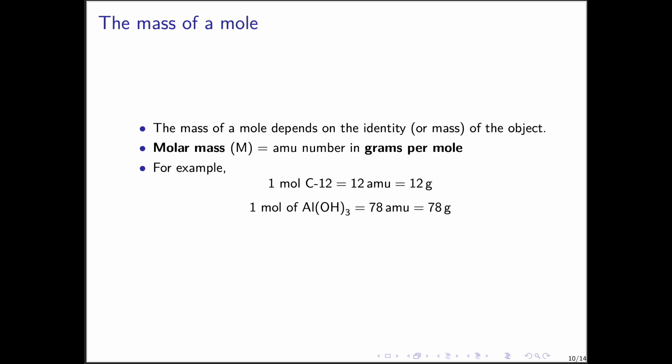The mass of one mole of a substance depends on its identity. This is called the molar mass, and it is expressed in grams per mole. For example, if the atomic mass of carbon-12 is 12 atomic mass units, one mole of carbon atoms weighs exactly 12 grams, and its molar mass is 12 grams per mole.